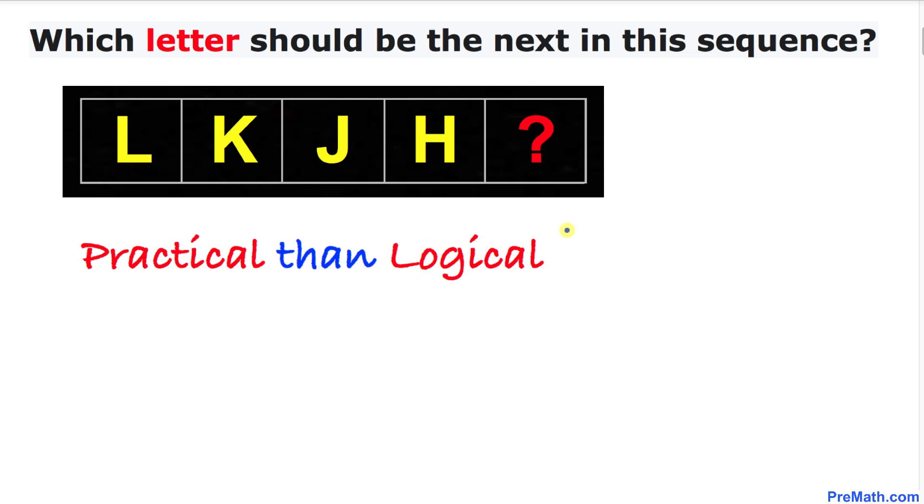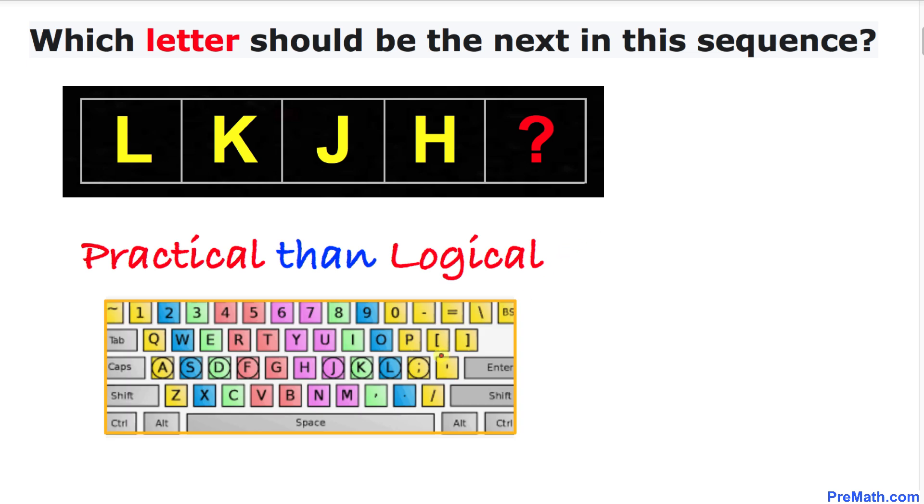Let me give you one clue. Here is a computer keyboard. Let's focus on this row over here. As you can see, we have L, K, J, H.